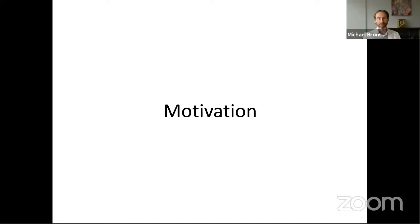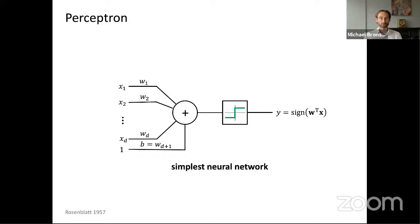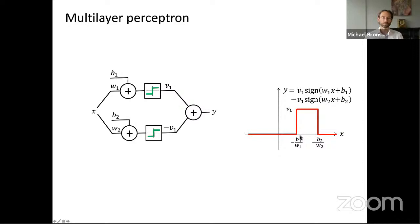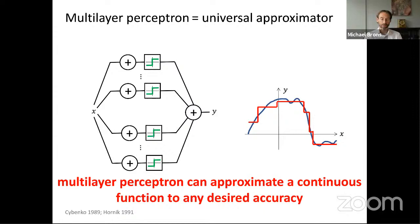Before diving into geometric deep learning, let's talk about an important concept in machine learning and deep learning in general, which is inductive biases. Let's look at a very simple neural network — probably the simplest, at least 60 years old — a single layer perceptron, which just takes a linear combination of the inputs and passes them through a nonlinear activation function. If we combine several such perceptrons into just two layers with one hidden layer, we can represent step functions.